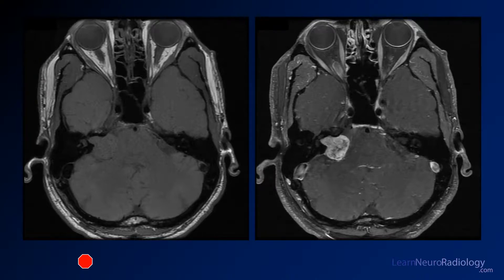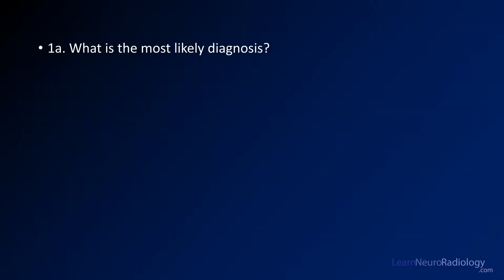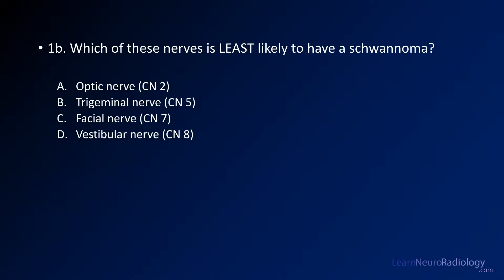Here are a few more images — these are pre and post contrast. Try to think of your diagnosis and come up with a differential. Your first question is: what is the most likely diagnosis? Your second question is: which of these nerves is least likely to have a schwannoma? This is one of those typical ABR questions that kind of gives away the answer on the second one, so you have some cranial nerves to choose from.